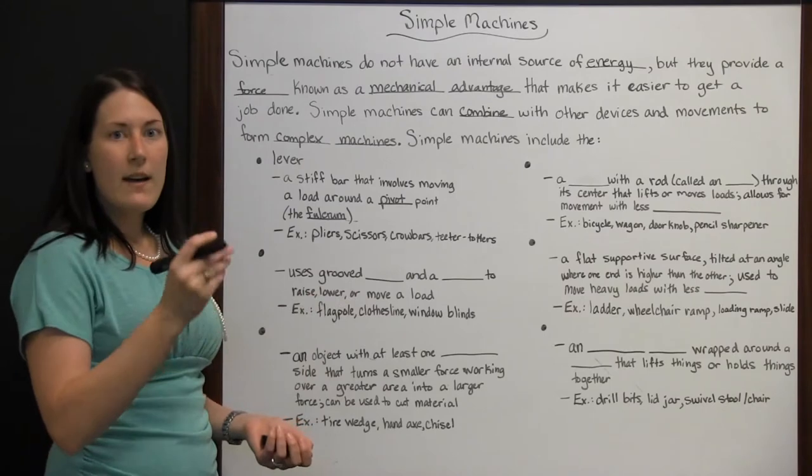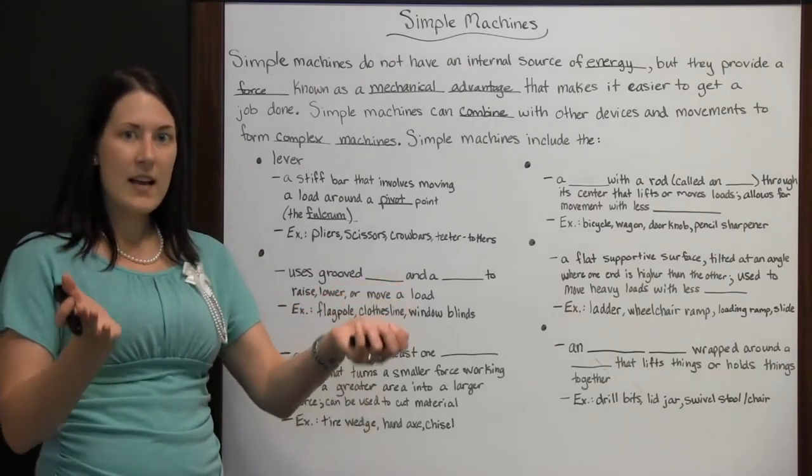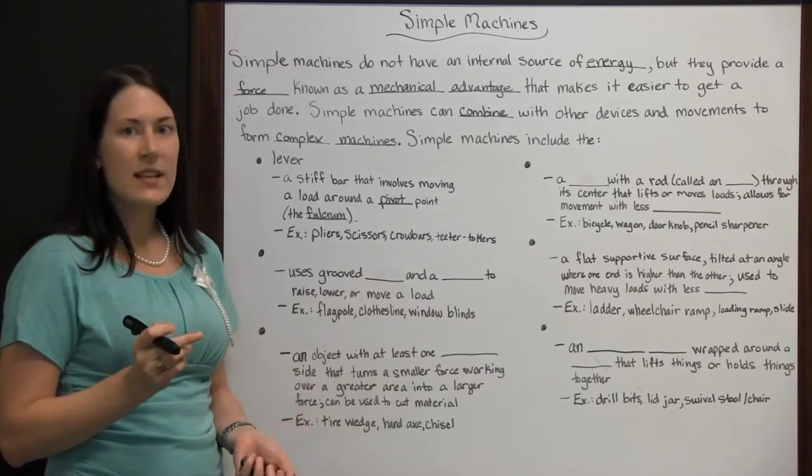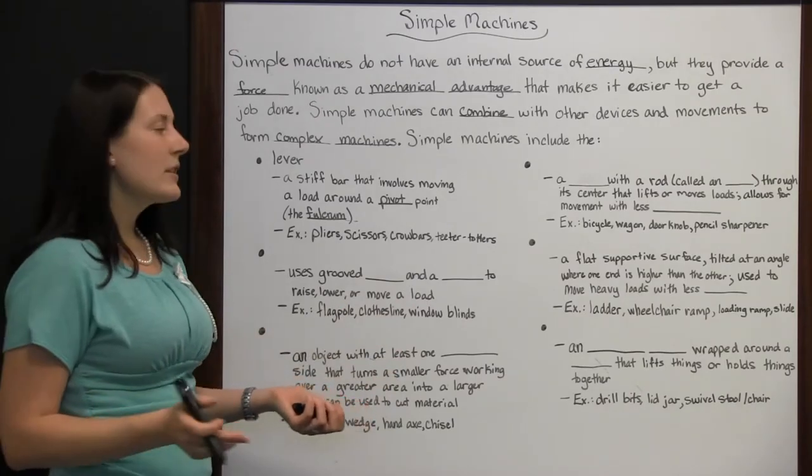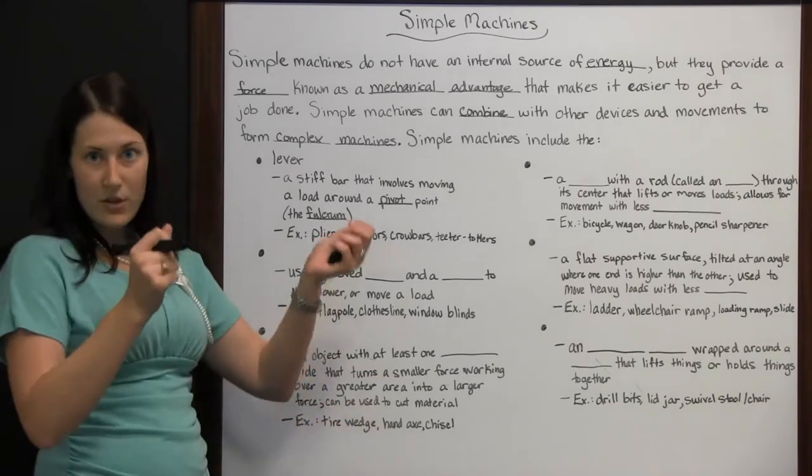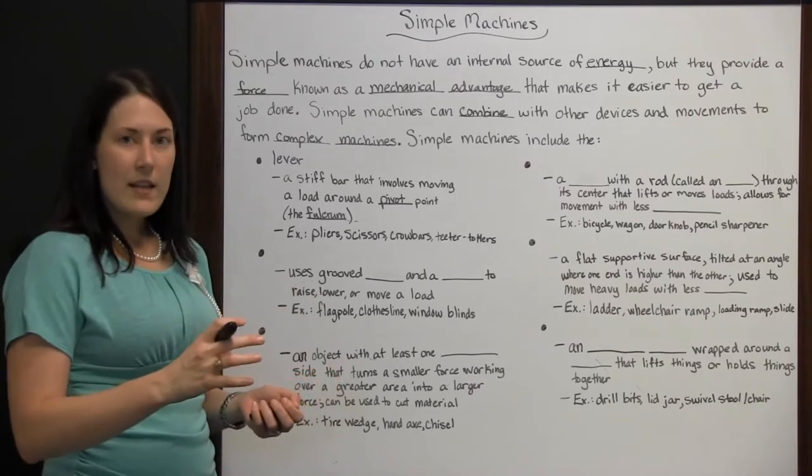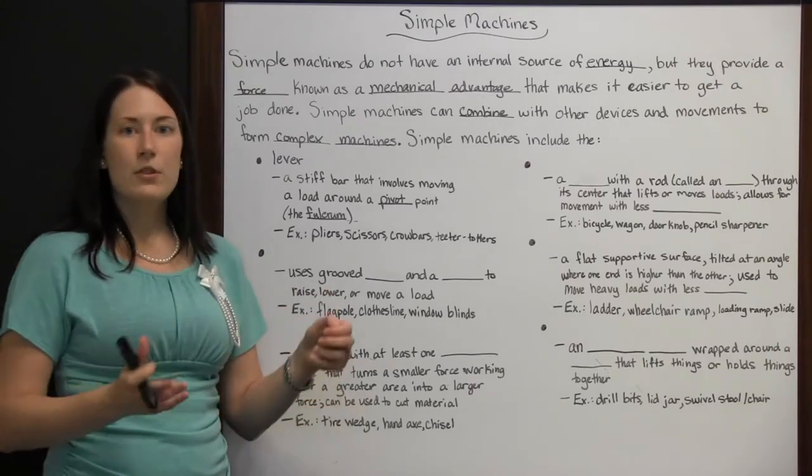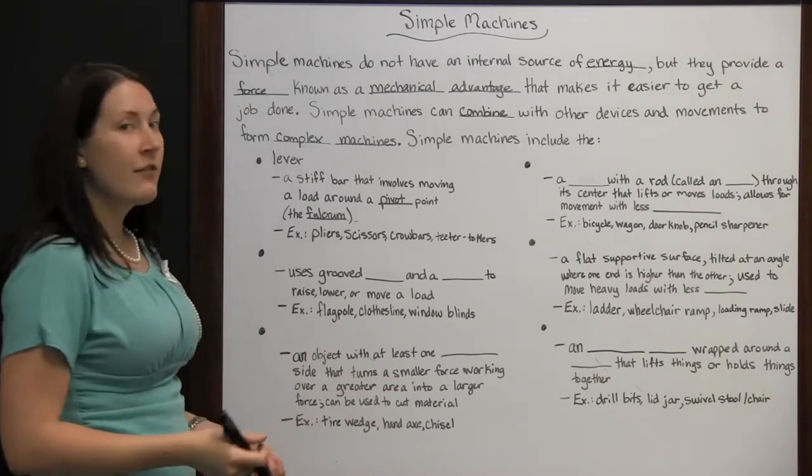Teeter-totters, you have the fulcrum located in the center, loads on either side that are able to move more easily. You're able to move, lift up, bounce another person where if you were on the ground trying to lift them straight up, you would not be able to do that. But with the lever and the help of the fulcrum, you're able to bounce them up in the air, at least raise them up several feet off the ground.